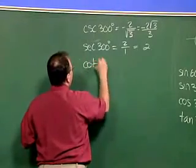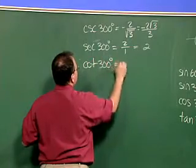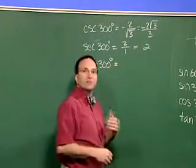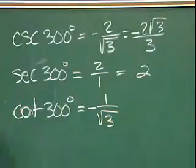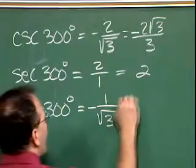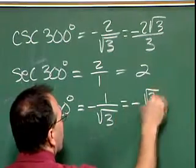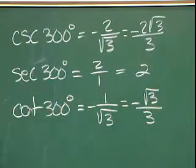And, finally, the cotangent of 300 degrees is simply the reciprocal of tangent, so it's one, or negative one, over the square root of three. We have to rationalize that denominator, so it's negative the square root of three divided by three.